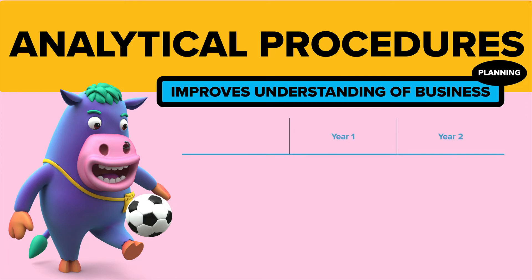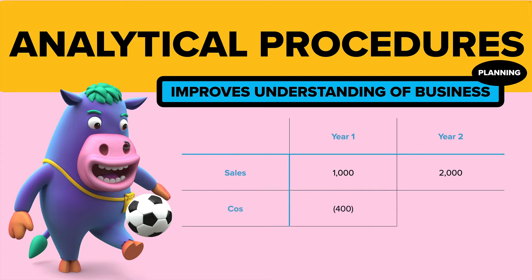Imagine this. You've got two years. You're doing year two of the audit, but you know that last year's sales were 1,000 and management have told you that this year's sales are 2,000. So you know they've done well — they've done doubly well. Last year the cost of sales was 400. So what would you expect the cost of sales to be in year two? Hopefully you'd expect them to double as well, but they weren't.